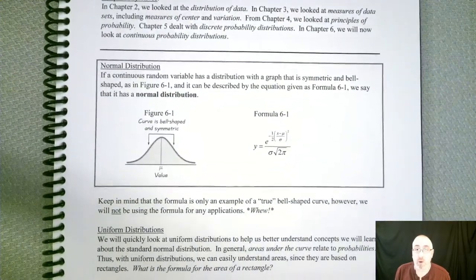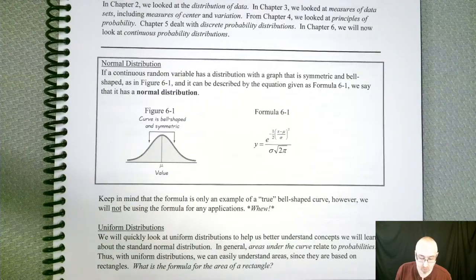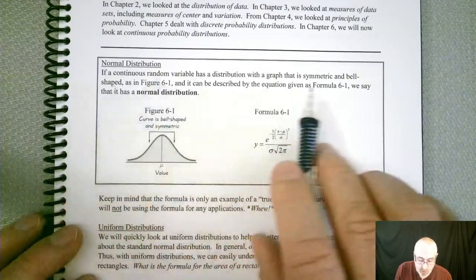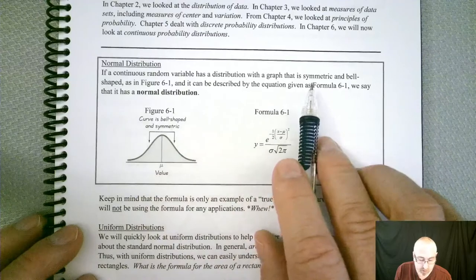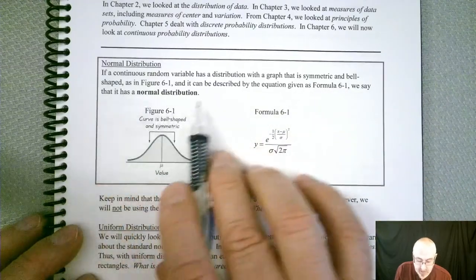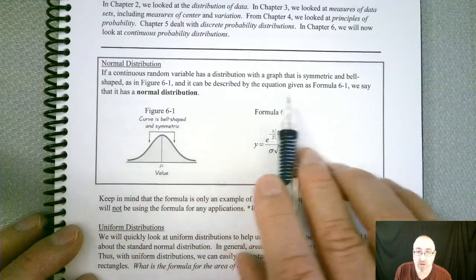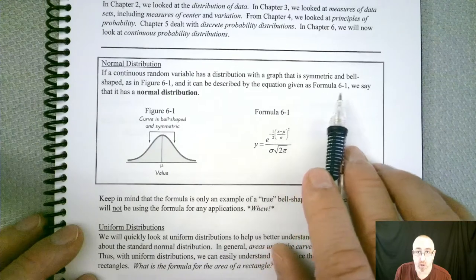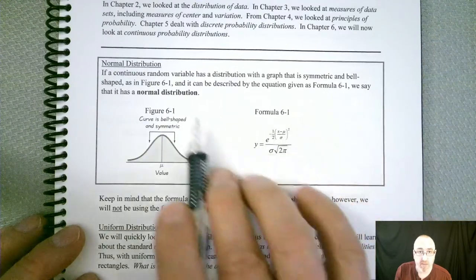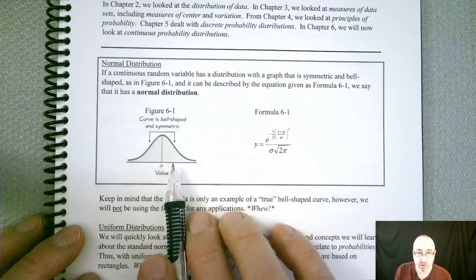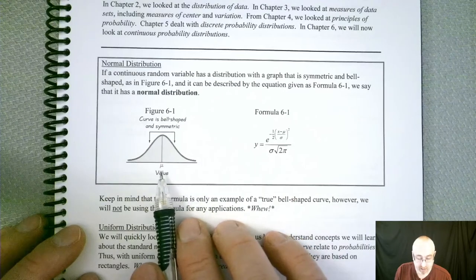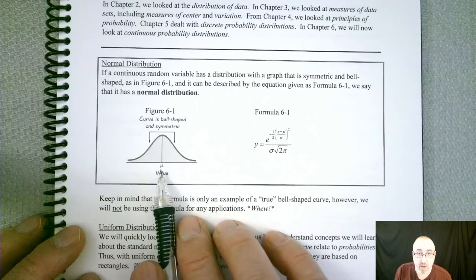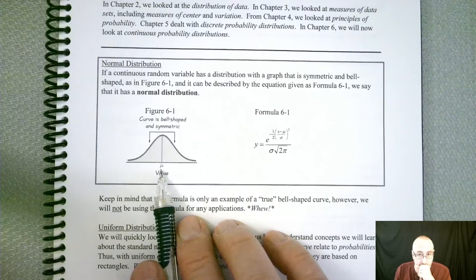Now for a normal distribution, it does have a formula. We already know what it looks like. It should be symmetrical, it should be bell-shaped. And it could be described by the equation given as formula 6.1 or 6-1. And then it would be a normal distribution. In these cases, the mean should be in the middle, which we already knew.